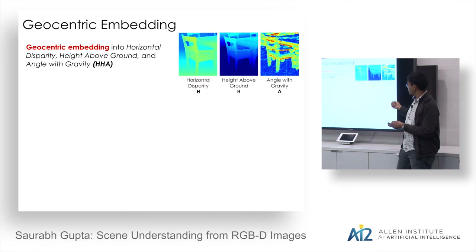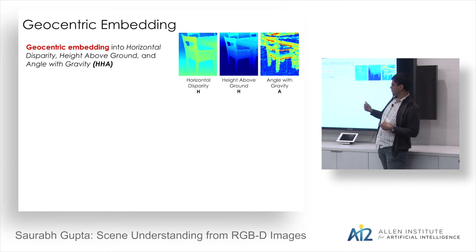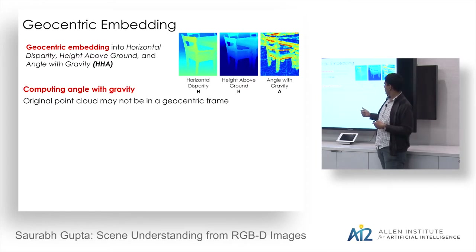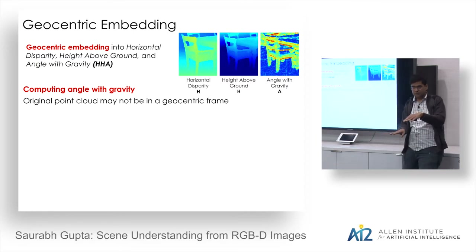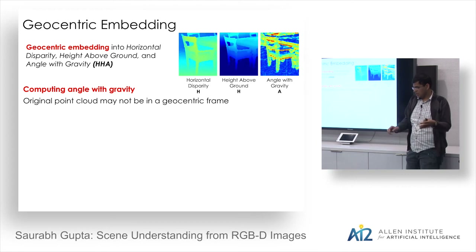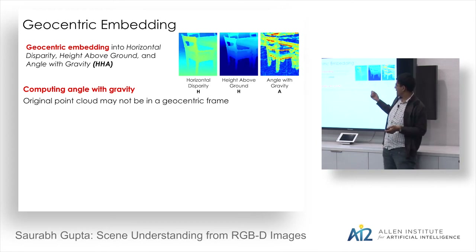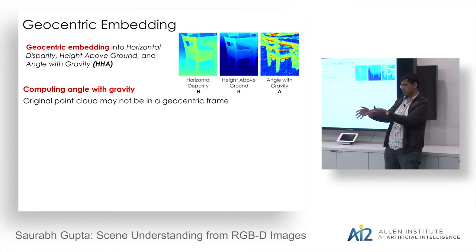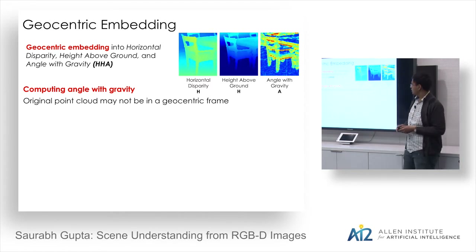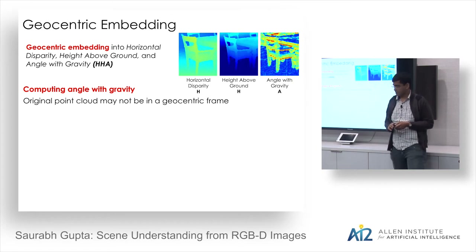The geocentric embedding takes the depth image and computes additional global channels: height above ground and angle with gravity. A chair is characterized by a horizontal surface at a particular height and a connected vertical surface. Computing these cues lets you detect such surfaces more easily. These are global features taking the whole scene into account, unlike purely local patch analysis.